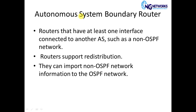ASBR stands for Autonomous System Border Router. This is a router which injects external routes into OSPF. That means this router is connected to some different routing protocol, such as EIGRP, BGP, or any other routing protocol.